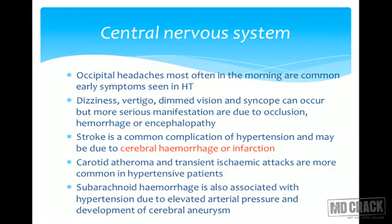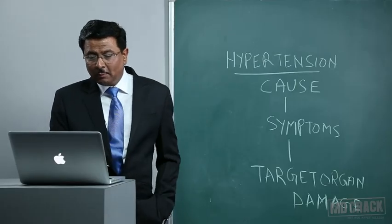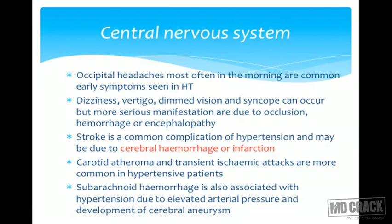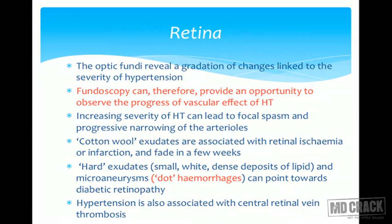Hypertension is a major risk factor in the pathogenesis of aortic aneurysm and aortic dissection. Regarding the central nervous system, occipital headaches most often in the morning are common early symptoms. Dizziness, vertigo, diminished vision, and syncope can occur, but the more serious manifestations are due to occlusion of an artery, hemorrhage, or encephalopathy. Stroke is a common complication of hypertension and may be due to cerebral hemorrhage or infarction. Carotid atheroma and transient ischemic attacks are more common in hypertensive patients. Subarachnoid hemorrhage is also associated with hypertension, possibly due to development of a cerebral aneurysm.